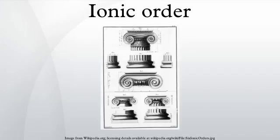The Ionic order forms one of the three orders of classical architecture, the other two canonic orders being the Doric and the Corinthian. The Ionic columns are the most thin and small columns out of the three canonic orders. The Ionic capital is characterized by the use of volutes. The Ionic columns normally stand on a base which separates the shaft of the column from the stylobate or platform. The cap is usually enriched with egg and dart.